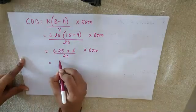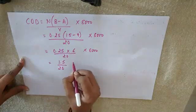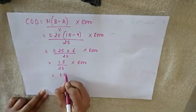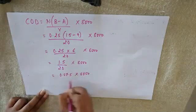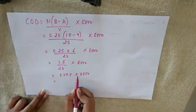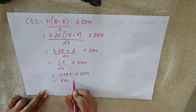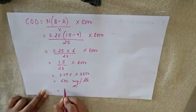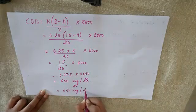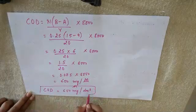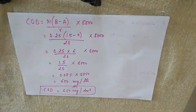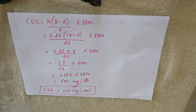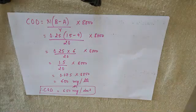So 0.25 × 6 is 1.5, divided by 20 × 8000. This equals 1.5 divided by 20, which is 0.075, multiplied by 8000. When you multiply 0.075 × 8000 you get 600 mg per litre, or you can also write it as 600 mg per dm³. So this is the COD of the sample. This is how you do the stepwise calculation for the given problem.